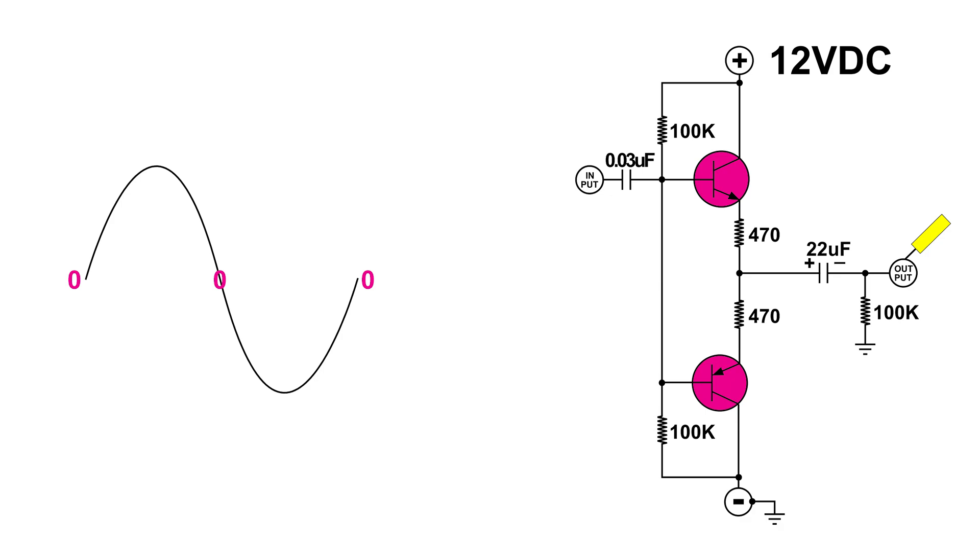Now all the way over to the left, as we go positive, the NPN transistor at the top is going to start conducting more. And the PNP transistor at the bottom is going to start conducting less. Thus, push and pull.